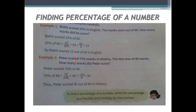Next: Peter scored 75 percent in history. The test was out of 40 marks. How many marks did Peter score? Peter got 75 percent in history, but the test is out of 40 marks. So we need to find how many marks he actually got — that is 75 percent of 40.